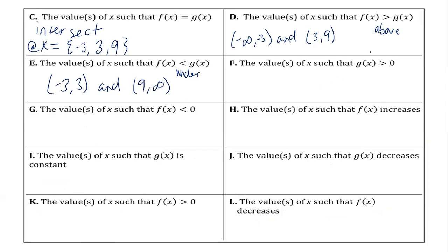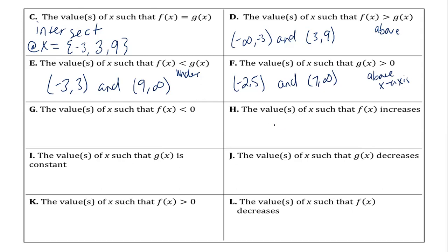Anytime it says when is g of x greater than zero, this is asking where are you above the x-axis. So when is g of x above the x-axis? Brackets — as soon as they throw in that equal sign, our parentheses become a bracket. We get our brackets from the equal sign.